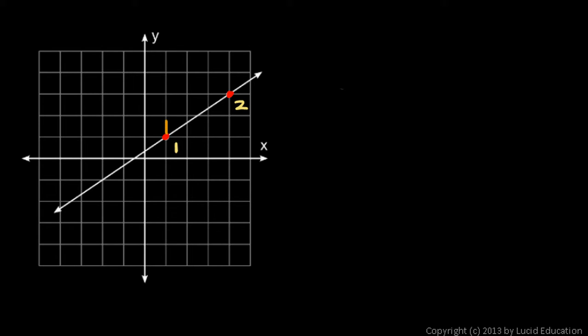And you can see that on the graph. We go up this far, and we go over that far. And the amount that we go up is called the rise. And the amount that we go over is called the run. And those are two terms that you hear a lot, the rise and the run.